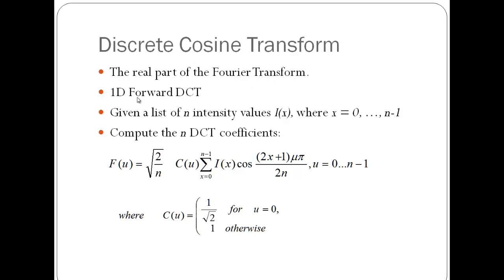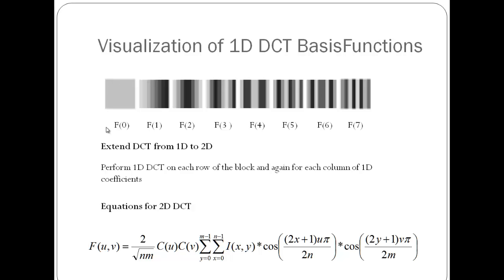For the one-dimensional forward DCT, if I have a list of N intensity values, my intensity can be represented as I(x) where x varies from 0 to N-1 for N pixels. We can compute the N DCT coefficients using this formula. Rather than getting into the mathematics, we can see visually how it looks. These are the basis functions for a 1D DCT. F0 gives the DC value, which is the average intensity value of the pixels. F1, F2 are the AC components and so on. Notice these are basically mirror images about the origin.